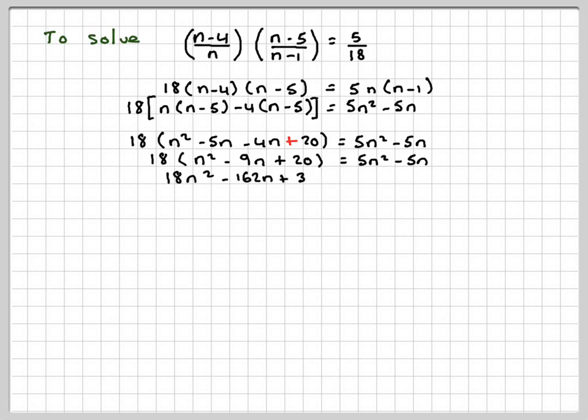Multiplying through by 18, we're going to get 18n squared minus 162n plus 360 is equal to 5n squared minus 5n. Now, to solve a quadratic, you put it equal to 0. So we're going to have, taking away 5n squared, we're going to get 13n squared. Adding 5n to both sides, we're going to get minus 157n plus 360 is equal to 0. So this is our quadratic.